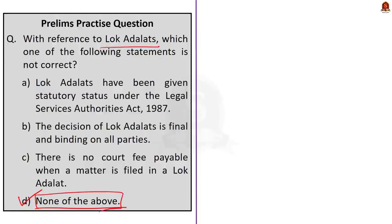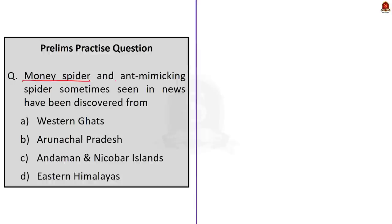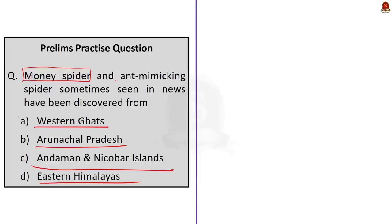Second question: money spiders and ant mimicking spiders, sometimes seen in news, have been discovered from — option A: Western Ghats, option B: Arunachal Pradesh, option C: Andaman and Nicobar Islands, option D: Eastern Himalayas. The correct answer is option A — Western Ghats. As discussed, these species were found in Wayanad Wildlife Sanctuary, which is an integral part of the Nilgiri Biosphere Reserve located in the Western Ghats.